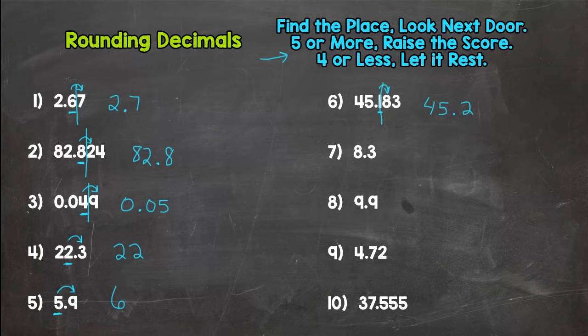For number seven, nearest whole number. Is eight and three tenths closer to eight or nine? Looking next door, that three says stay the same, so this number rounds to eight.